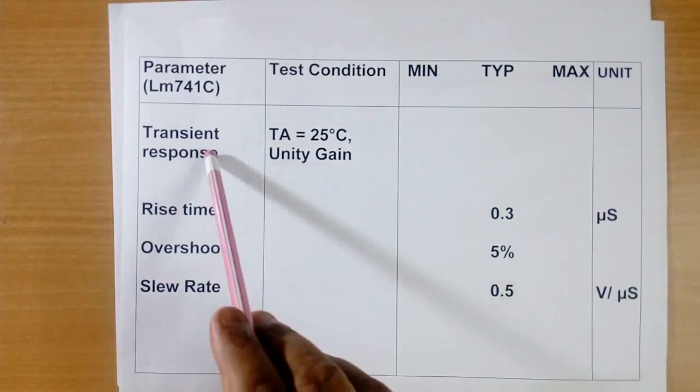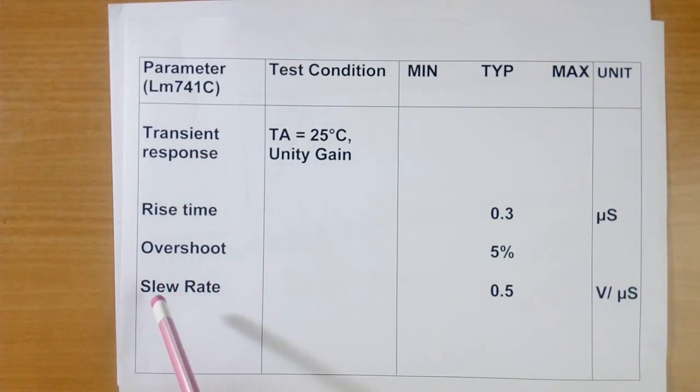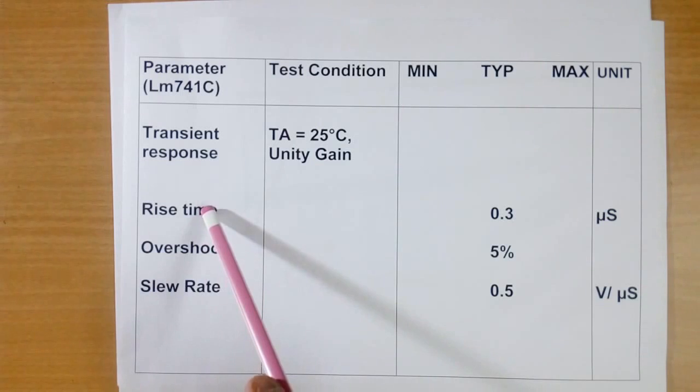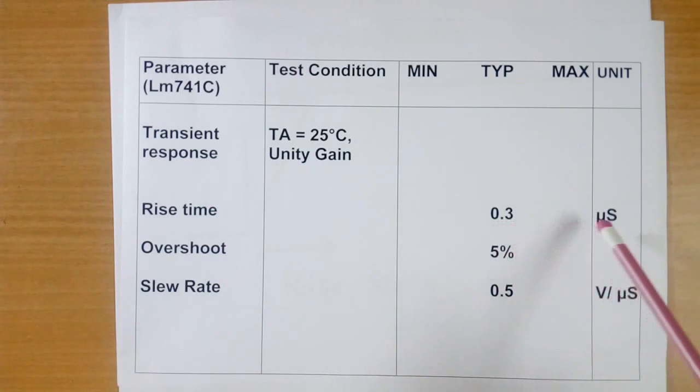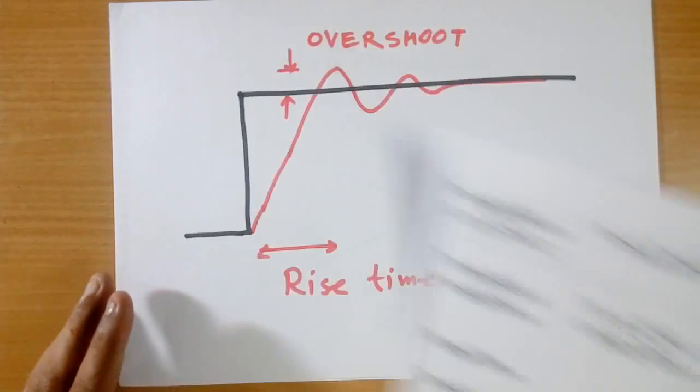Now transient response time. Earlier in part 1 we have discussed the slew rate. In addition to slew rate, there is a rise time and there is an overshoot. Rise time of 741C is 0.3 microsecond. This means output will be slow. And overshoot is 5%.